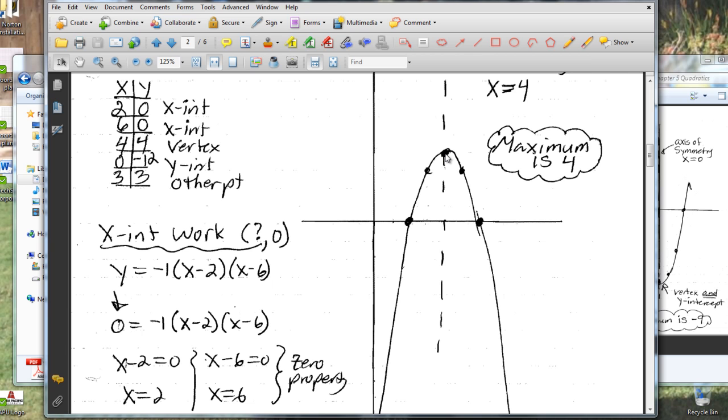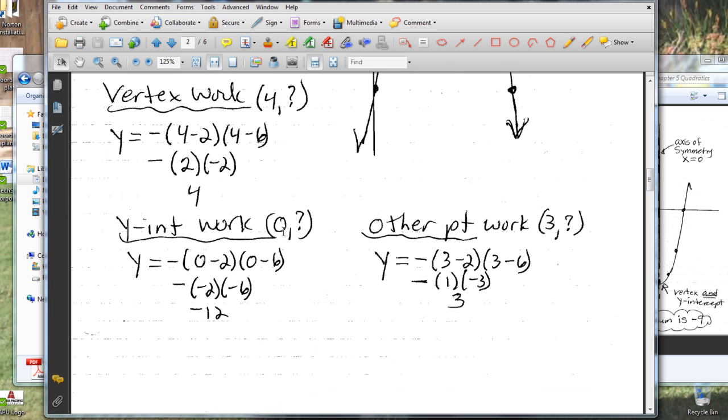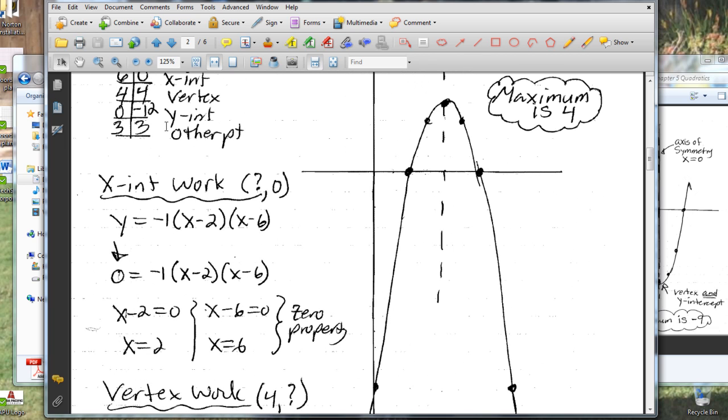Then we want to get at least a few more points. So I decided, first of all, I went ahead and did the y-intercept. So the y-intercept is when x is zero. So we put in zero for x. Work that out, we got negative twelve.